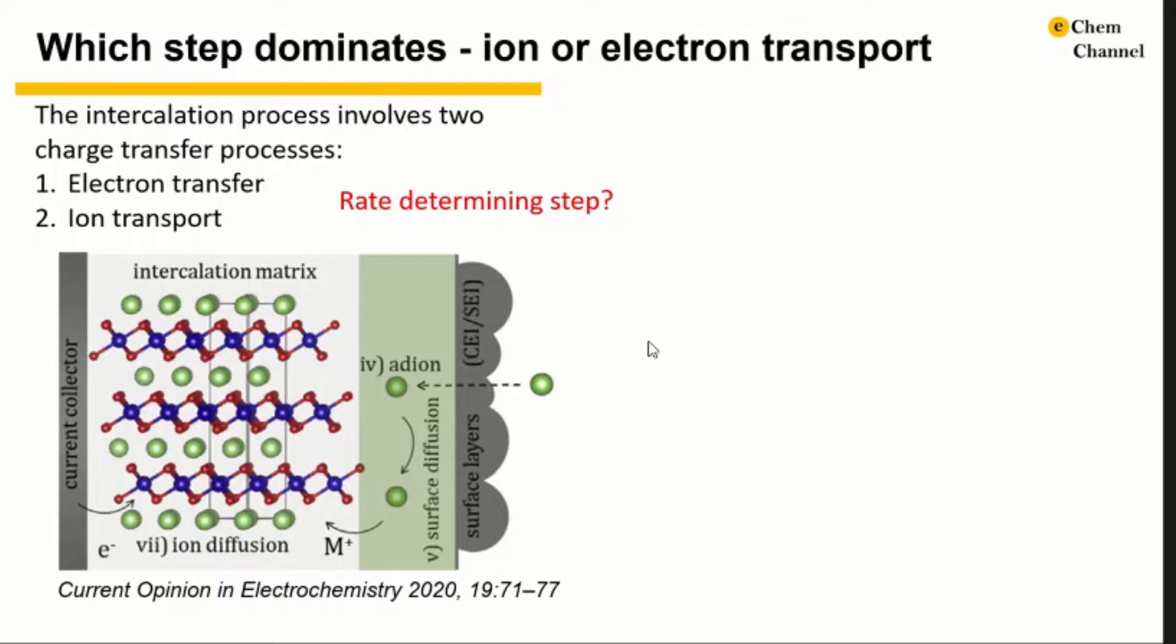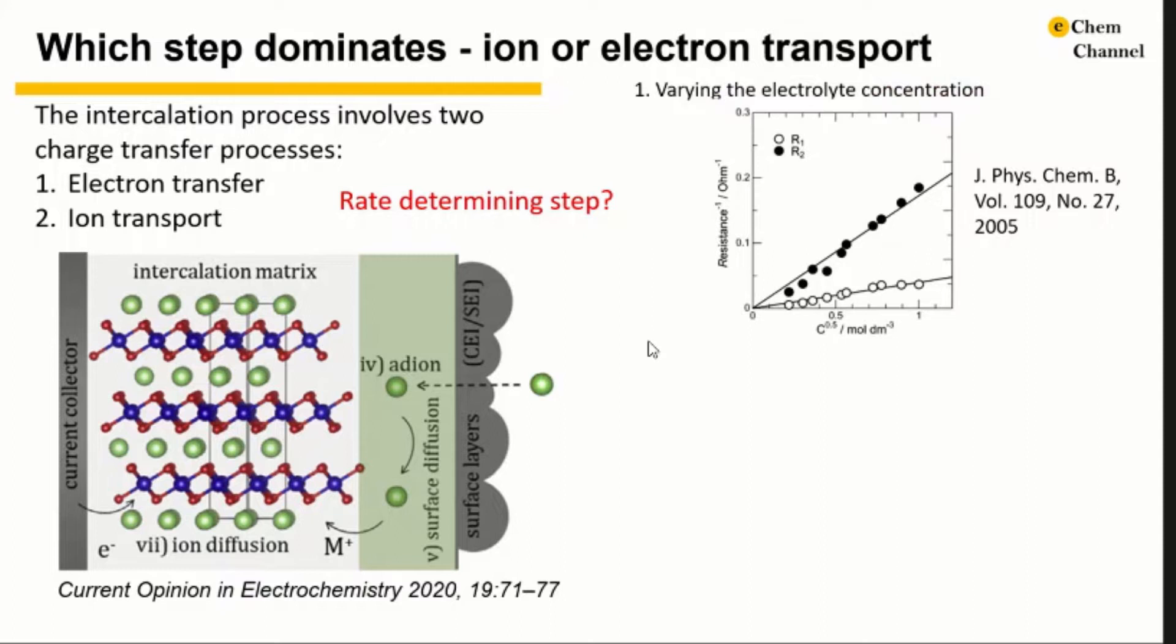There are two easy ways to tell the rate-determining step for well-studied materials such as lithium cobalt oxide, lithium manganese oxide, and vanadium oxide. The first one is to change the concentration of ions in the bulk solution. Kobayashi and Ichimura found that the resistance for high and median frequency R1 and R2 in lithium manganese oxide all decreases when the concentration of ions in the bulk electrolyte increases. The sharp dependence of charge transfer resistance on the lithium ion concentration suggests that the ion transport instead of the electron transfer is the rate-determining factor.